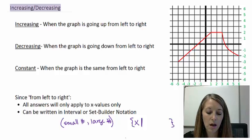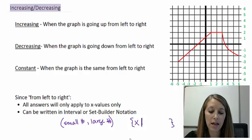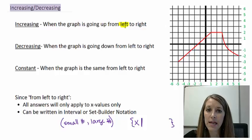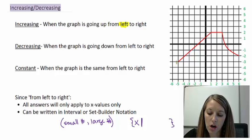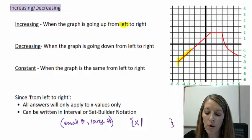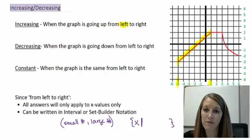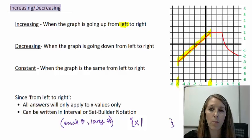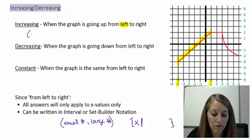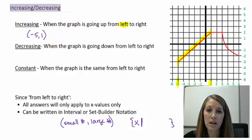Let's look at this example. We start from the leftmost part of our graph and trace it to decide if we're increasing, decreasing, or constant. Starting at the leftmost point, which is negative 5, notice the graph is going up, so this is an increasing interval. It stops increasing at x equals 1. So in interval notation, the graph is increasing from negative 5 to 1, with parentheses — no endpoints included.